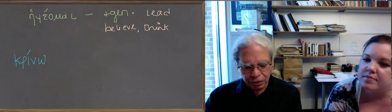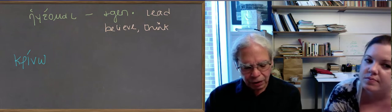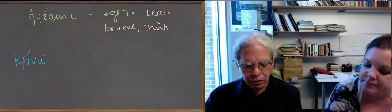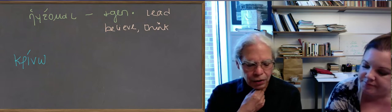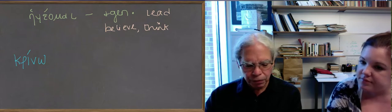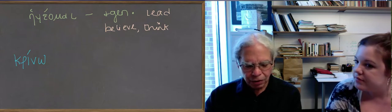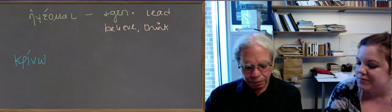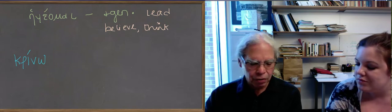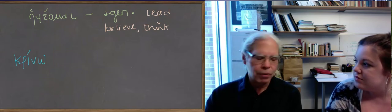You've got kekrika, kekrimi, there the root, and ekrithain has no nu. The nu is an artifact of the imperfective aspect. It shouldn't even be in the aorist. But you can see that form in crisis, for example, which comes from this.